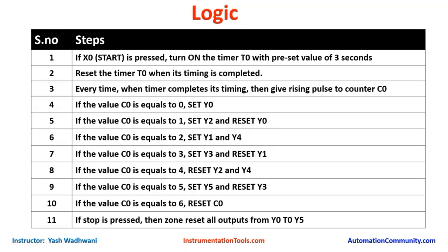Now let us understand the logic required to create this project. If the start button is pressed we turn on timer T0 with a preset value of three seconds, because we want three seconds of delay between each operation. It will count up to three seconds and when the timer value reaches three seconds, the T0 bit will become on and reset itself so it can restart counting from zero. When this bit becomes high, we give a rising pulse to our counter. Initially the value of C0 will be 0, and if the counter value equals 0 we set Y0 so cylinder 1 will advance.